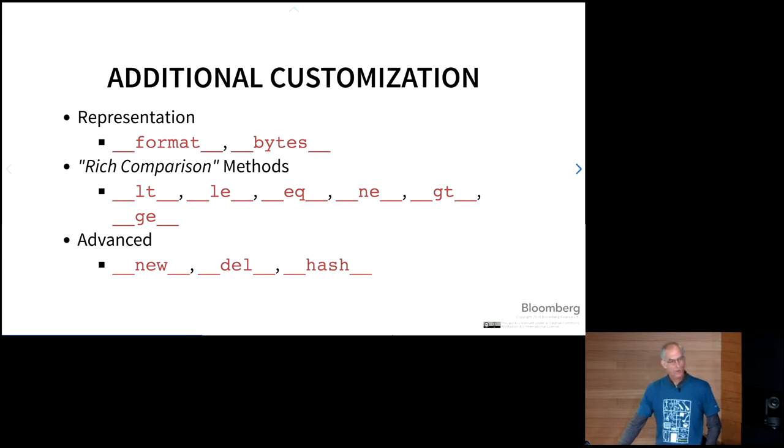There are some additional customizations, way too many to go into. There's some more around representation, such as Dunder format and Dunder bytes. There's what the documentation calls rich comparison methods, which is the less than, less than or equal to, so on and so forth. And then there are some advanced Dunder methods, such as Dunder new, Dunder del, and Dunder hash, which you should only be implementing when you really know what you're doing. You can get yourself into serious trouble with those three.